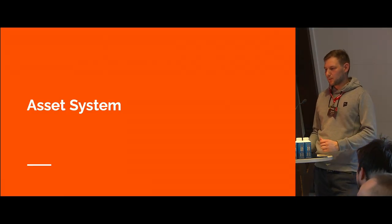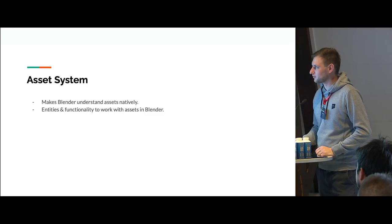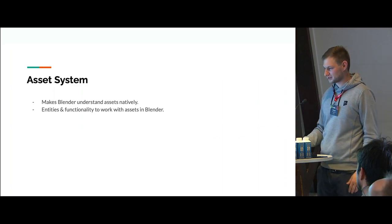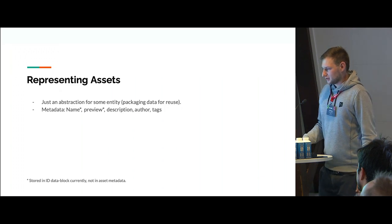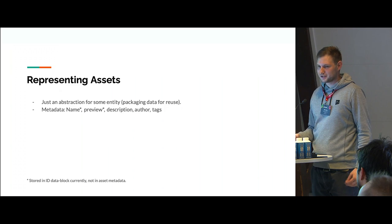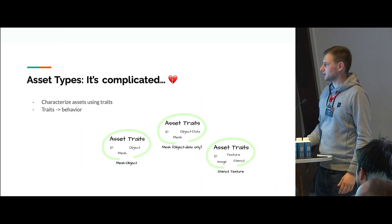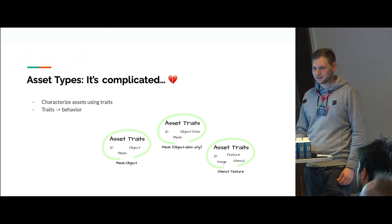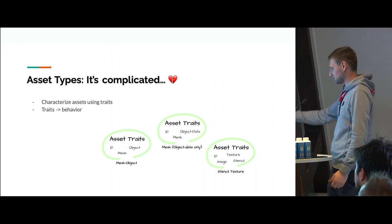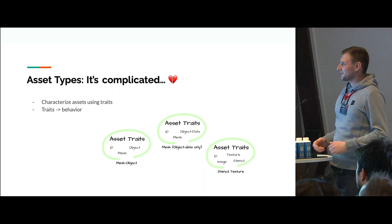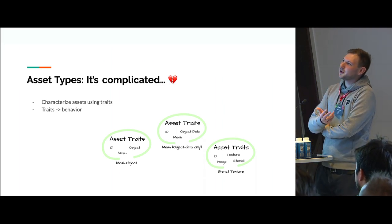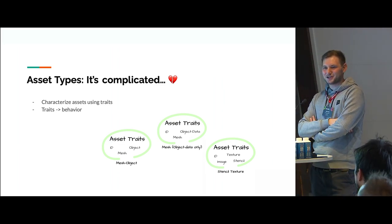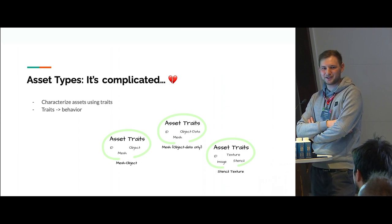Very briefly, the asset system: this is the foundation for how to get assets into Blender — basically what makes Blender understand assets natively. It's really just an abstraction, and if we have that abstraction we can build on it. Back in the day, things had different types — object, material, and so on — but things are getting more and more fuzzy. With geometry nodes, it becomes really fuzzy because geometry nodes can generate all kinds of geometry and mesh data.